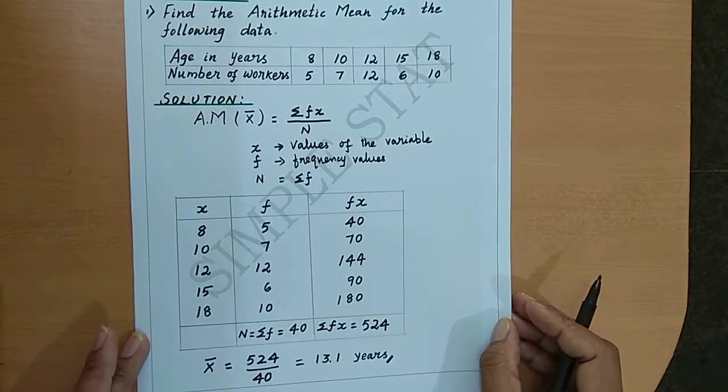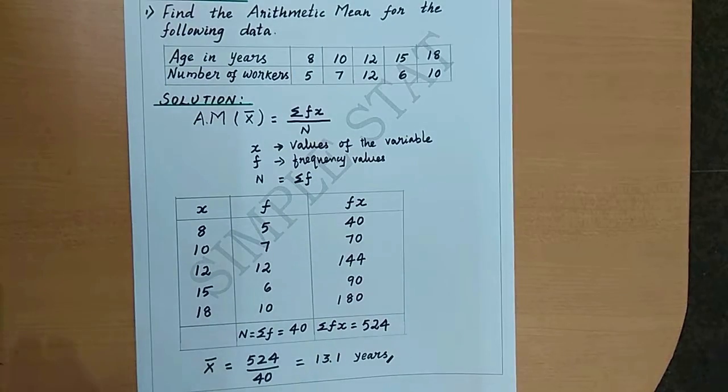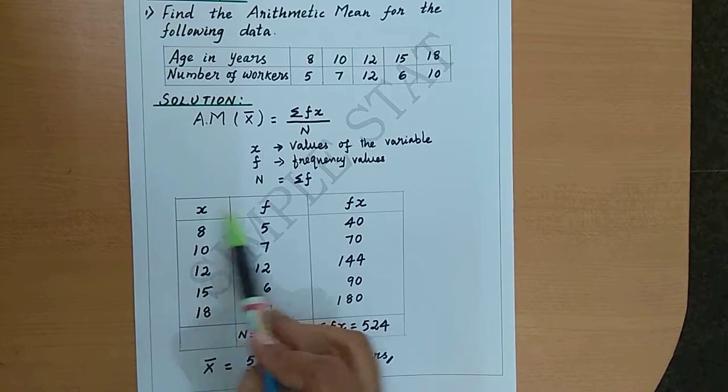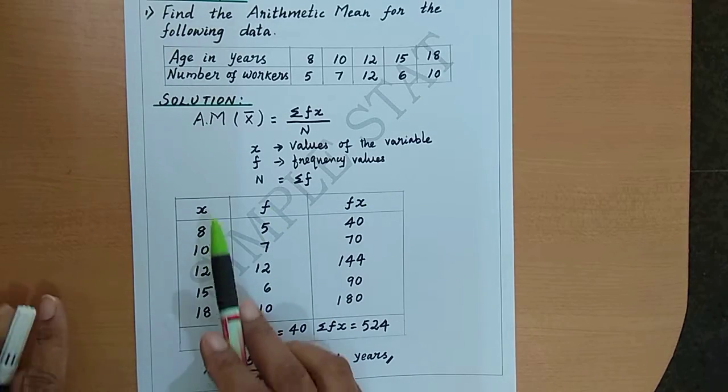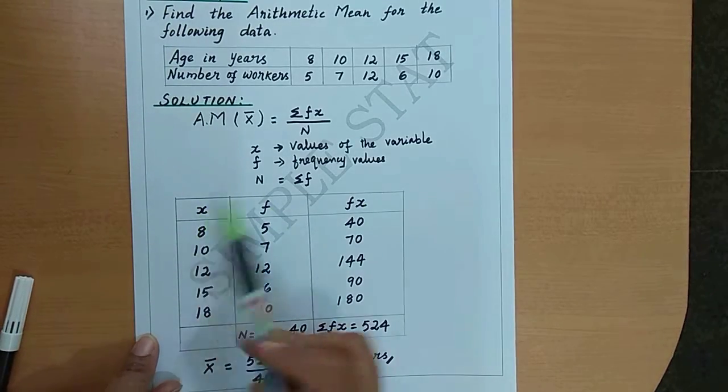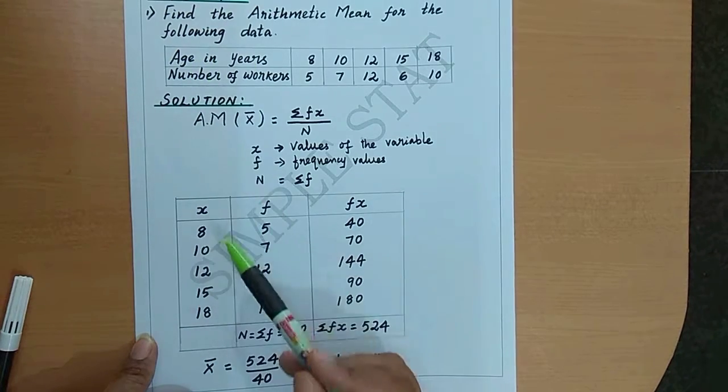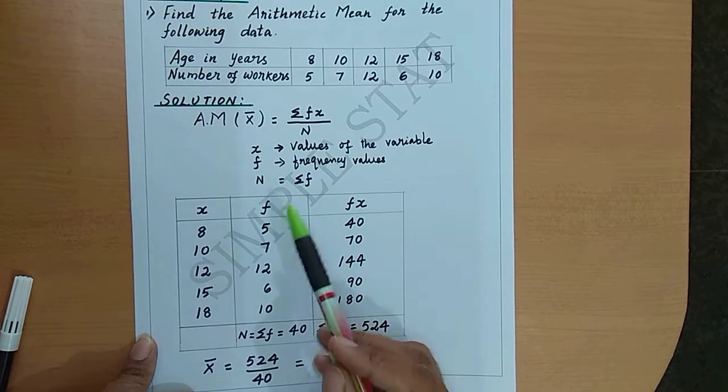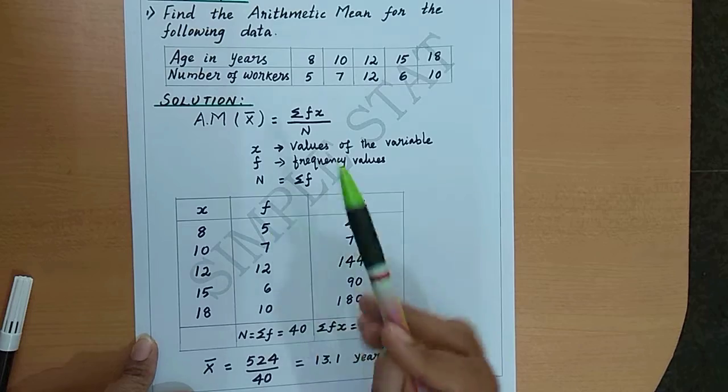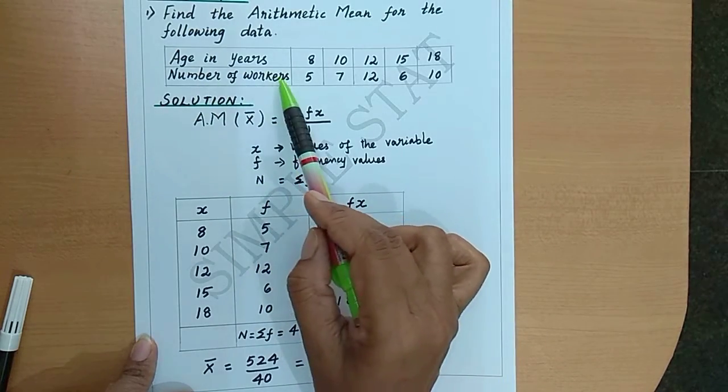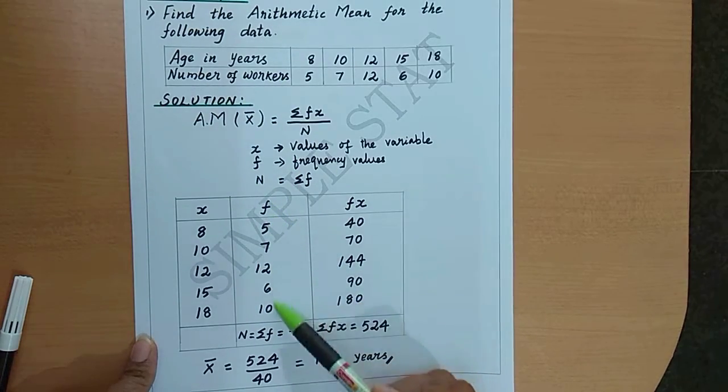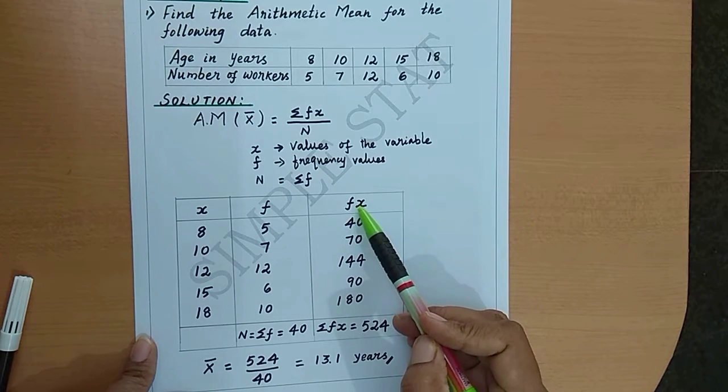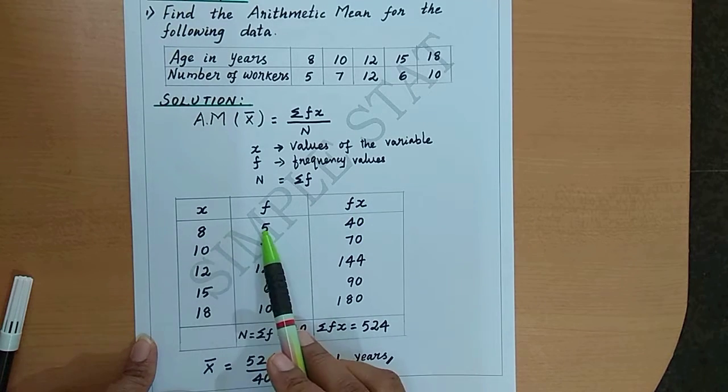According to the formula, we need x, f, and fx. x is nothing but the given variable, which is age in years. Write all the x values. f denotes frequency values; we have number of workers as the frequency. Write all the frequency values, then proceed with f into x: 5 into 8 is 40, 7 into 10 is 70, etc.